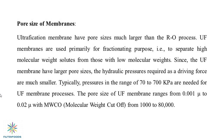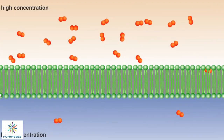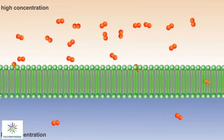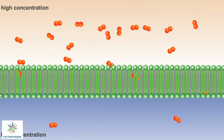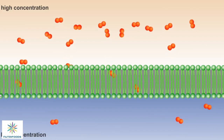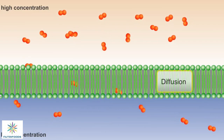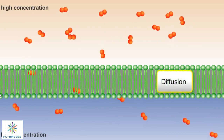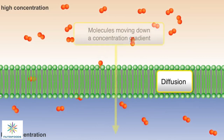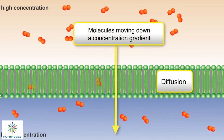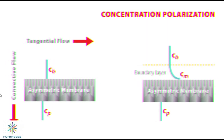Since the ultrafiltration membranes have a larger pore size, the hydraulic pressure required as a driving force is much smaller. Typically, pressure in the range of 70 to 700 kPa is needed. The pore size of ultrafiltration membranes ranges from 0.001 micron to 0.02 micron, with a molecular weight cutoff from 1,000 to 80,000.